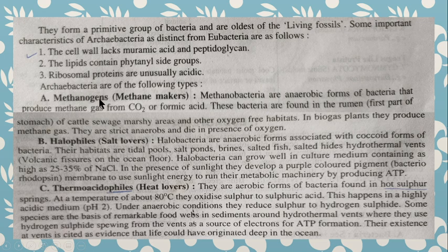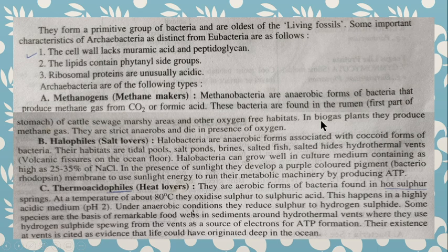One is known as methanogens — these are the methane makers. They are found as anaerobic forms and they produce methane gas from carbon dioxide. These bacteria are also seen in the stomach of cattle, and they are also found in marshy areas which are free of oxygen. They play a good role in biogas plants because they produce methane gas. These are strict anaerobes and they die in the presence of oxygen.